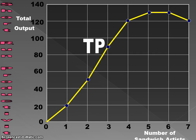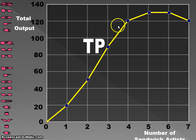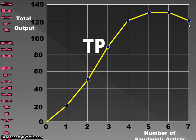The total product curve is going to have a particular shape. As workers are added to the shift — one worker, two workers, three, four, five — as the number of workers increases, the amount of output that can be produced increases to a certain point. This is where overcrowding sets in, and then eventually output tops off and begins to decrease, because we'll get to a point where adding more workers to a shift at Subway isn't going to do anybody any good.